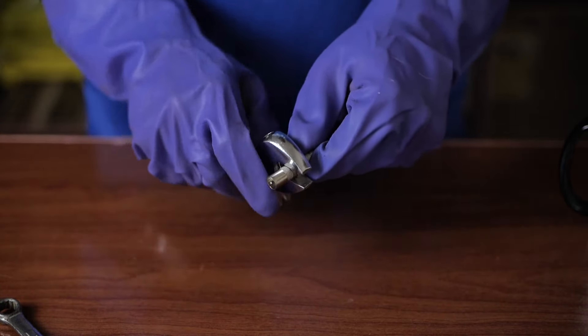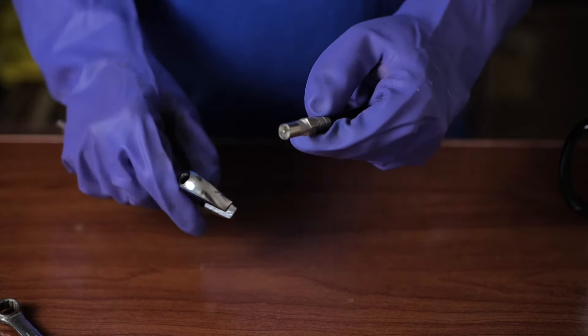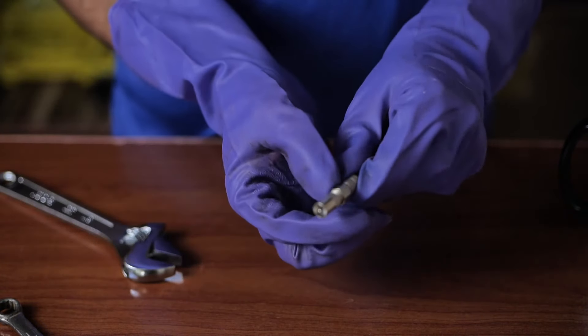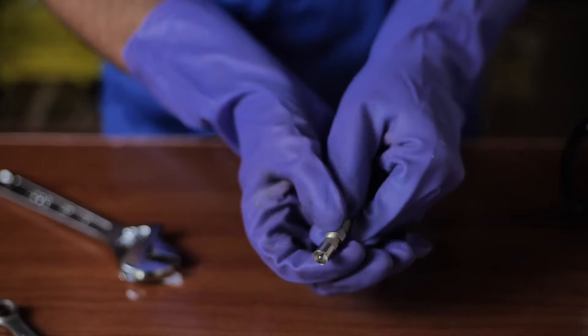As you keep twisting more and more, it will start to loosen. Once that happens, you can use your fingers to unscrew the cable cord completely, like we are doing here.